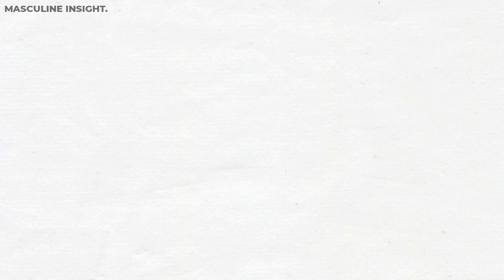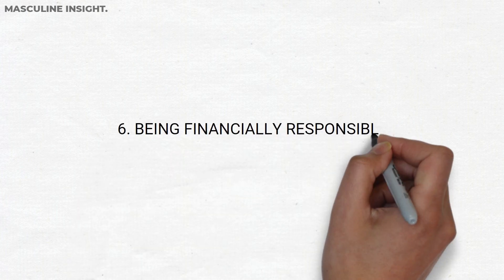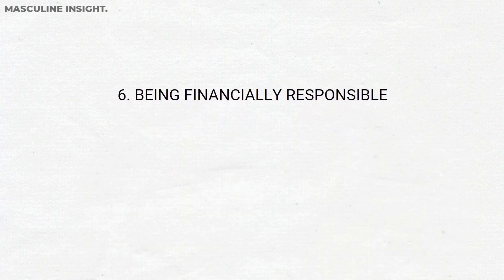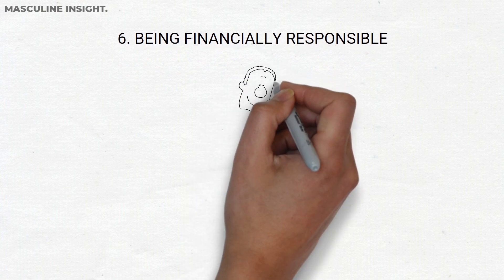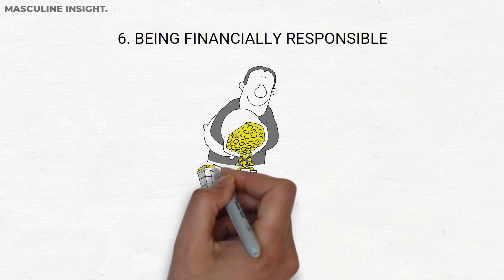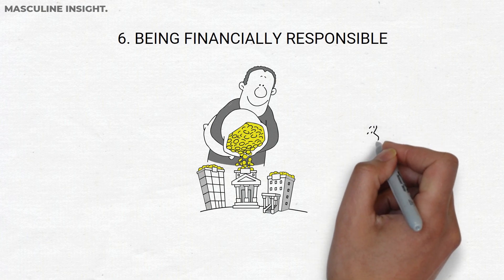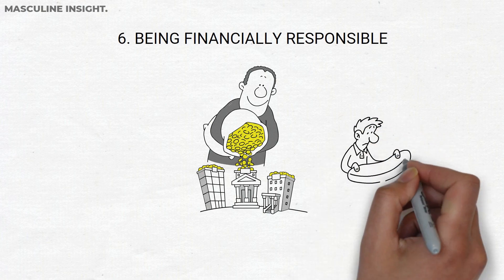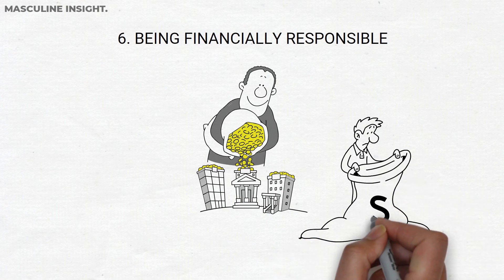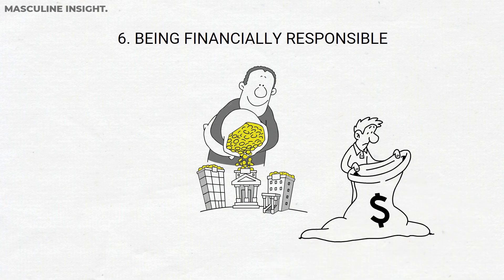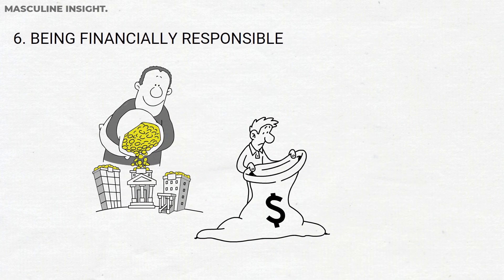6. Being financially responsible. Money is a necessary part of life, and being financially responsible means being able to budget, save, and invest wisely. This includes paying your bills on time, living within your means, and planning for the future. Financial responsibility is important for maintaining stability and security, both personally and within a relationship. It also allows you to be independent and self-sufficient, rather than relying on others to provide for your financial needs.